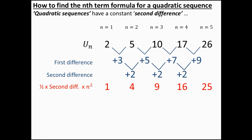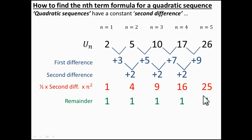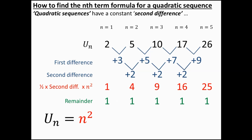What I'm going to do next is work out the difference between my sequence and these n squared terms. So 2 minus 1 is 1, 5 minus 4 is 1, 10 minus 9 is 1, and so on — I'll call that the remainder. The remainder for each term is 1. So the nth term formula for this quadratic sequence is n squared plus 1, because subtracting n squared from each term leaves 1. You can check whether it works by substituting n into the formula.